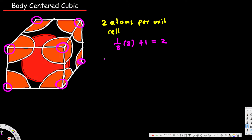For a body centered cubic structure, the coordination number is equal to eight. The reason is that every atom in a body centered cubic structure is connected with eight other atoms. You can see the atom in the middle is connected with eight atoms in the corners, so the coordination number is eight.